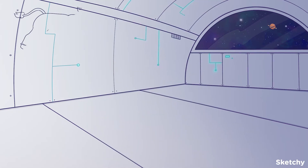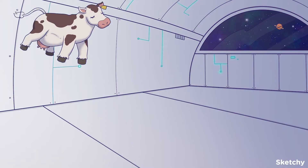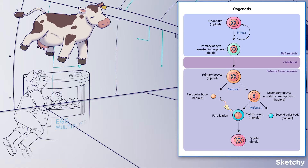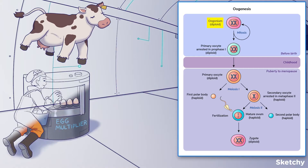To show that, we'll draw this pregnant cow. In the developing fetus, primordial germ cells originate from the primitive streak and migrate through the hindgut before reaching the gonadal ridge, which becomes the gonads. In the absence of a Y chromosome, the gonads become fetal ovaries and the primordial germ cells undergo mitosis, producing immature diploid cells called oogonia.